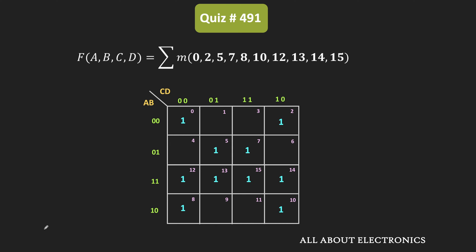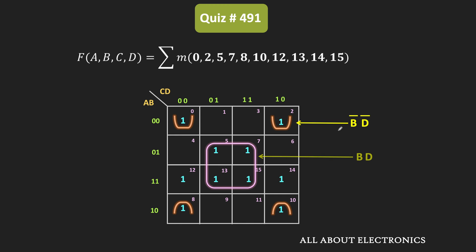As you can see, we can make a group of these four 1s, and this group corresponds to b̄·d̄. Likewise, we can combine the minterms 5, 7, 13, and 15, and this group corresponds to b·d. Similarly, we can combine minterms 12, 13, 14, and 15, and this group corresponds to a·b.